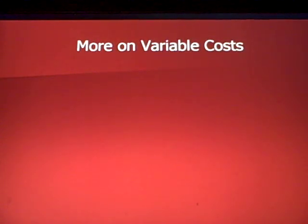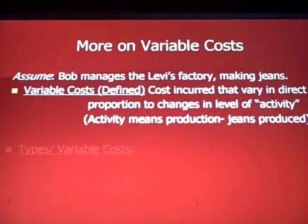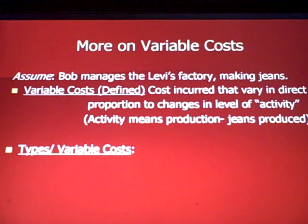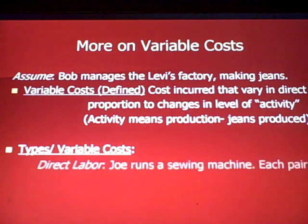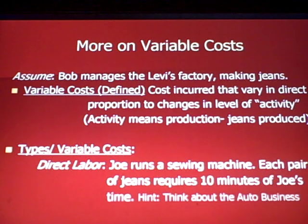Let's go with an example. Assume Bob manages a Levi's factory that makes blue jeans. Let's go back to our definition of variable costs: costs incurred that vary in direct proportion to changes in level of activity. In this case, activity means production. The more jeans you produce, the more variable costs you're going to incur. Let's be specific about two variable costs — first, direct labor.